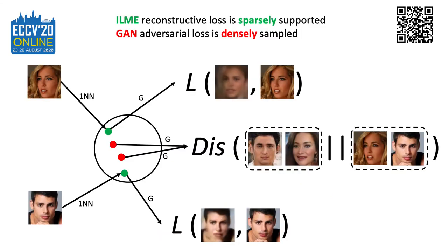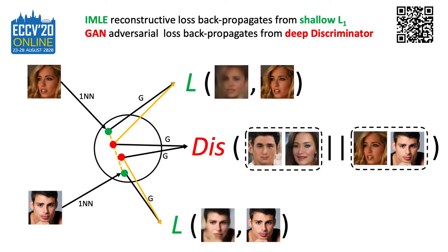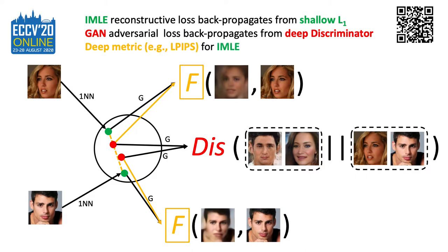However, combining the two models is non-trivial. The IMLE reconstructive loss is sparsely supported, while the GAN adversarial loss is densely sampled. We therefore propose interpolation-based augmentation for IMLE to bridge the sampling gap. On the other hand, the IMLE reconstructive loss back-propagates from shallow pixel loss, while the GAN adversarial loss back-propagates from a deep discriminator loss. We therefore propose using a deep-distance metric in reconstruction to harmonize the incompatibility of the two losses. According to our investigation, LPIPS metric is the most effective one.